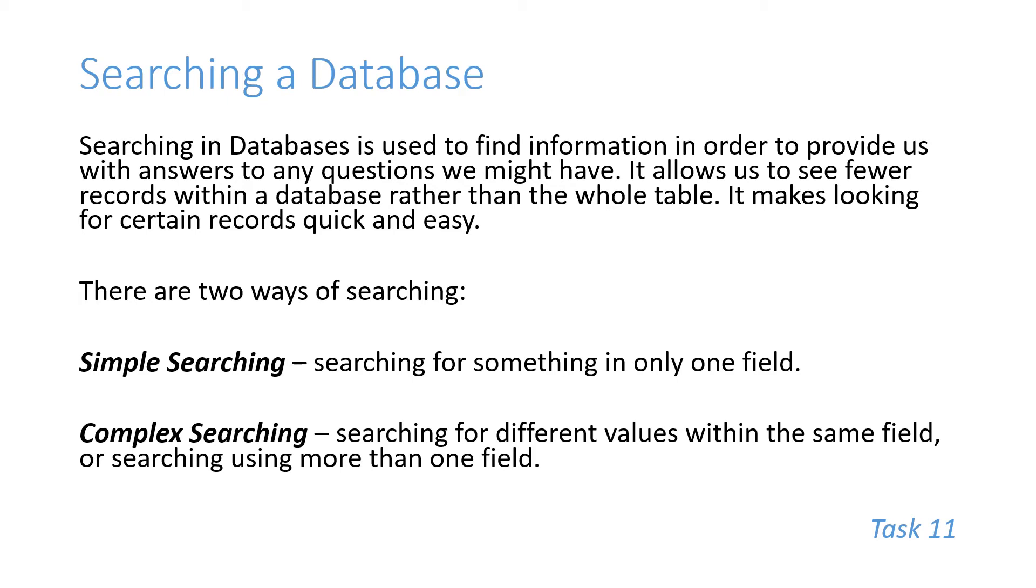I can also use a complex search, and that's what is going to give me even more specific results and nine times out of ten fewer records as well. A complex search is using either different values within the same field, so I can look for all S6 and S5 pupils, I'm putting two searches in the one field, or I could search using more than one field. If I wanted all S6 pupils in Dunglass house, that would narrow the search down even more. We started off with the database table full of every single pupil in the school, and now with my complex search for all S6 pupils in Dunglass house I'm going to get less records shown.